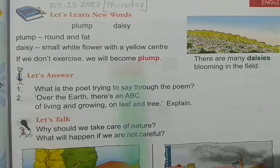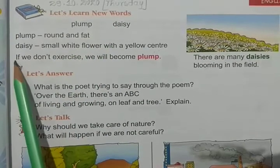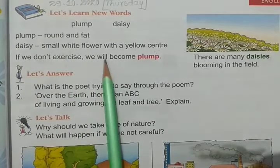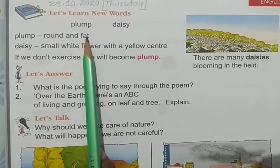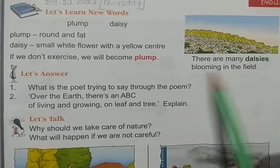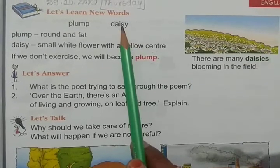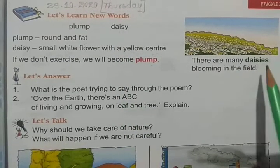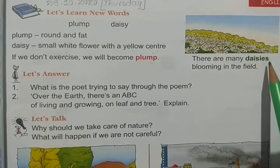Some sentences have been given here regarding these new words. If we don't exercise, we will become plum — plum means round and fat. For daisy: there are many daisies blooming in the field. The singular is daisy, D-A-I-S-Y, and the plural form is daisies, D-A-I-S-I-E-S.